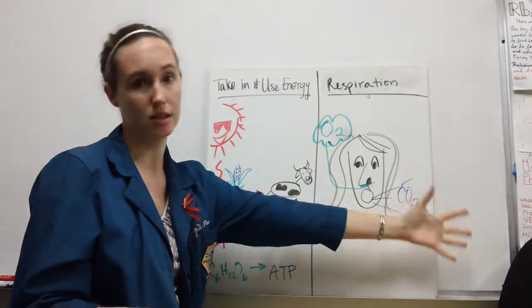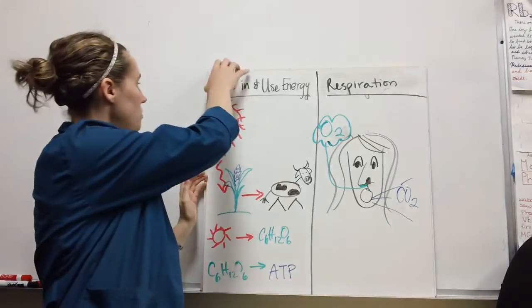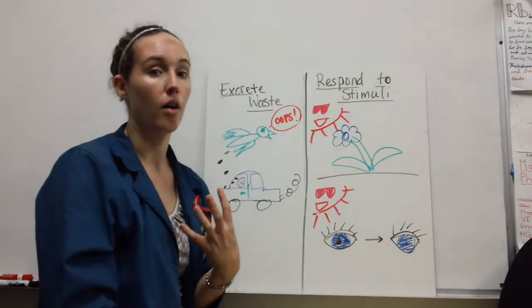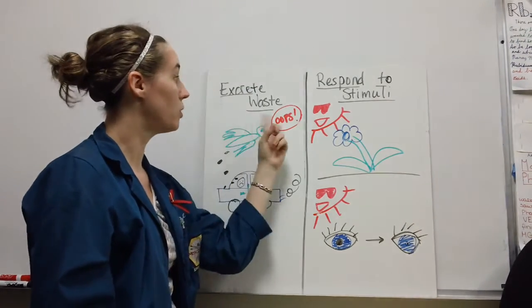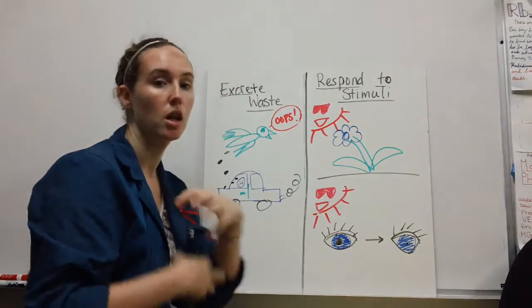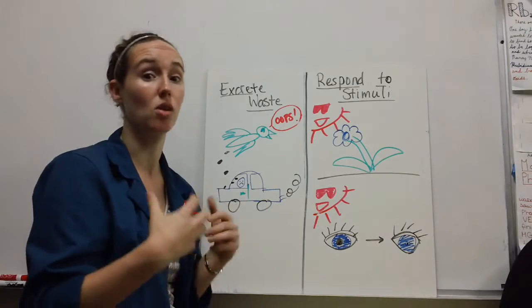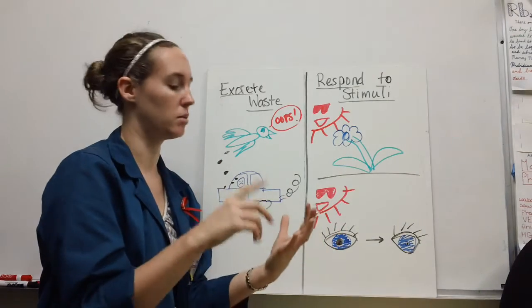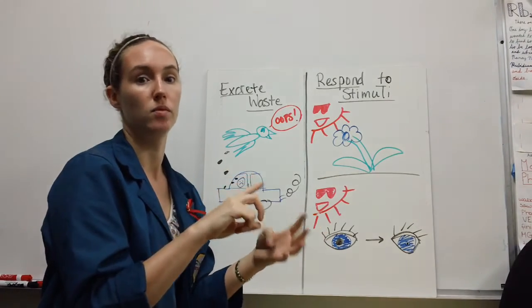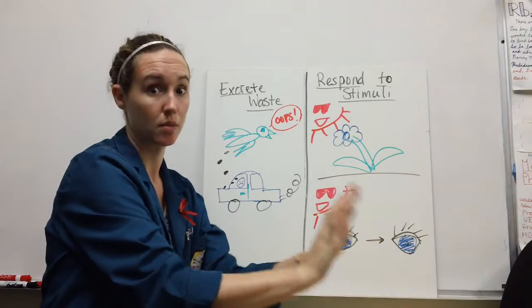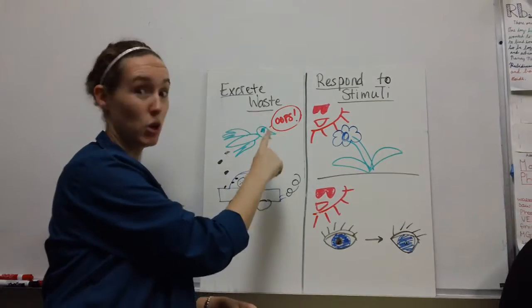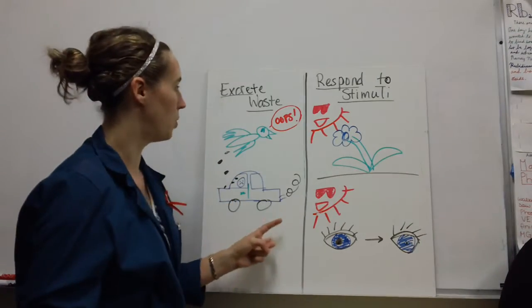All living things excrete waste. We're taking in energy, food, and oxygen, and all of our metabolic processes have waste products. This can be sweat, urine, feces, or sometimes just chemicals that get released out of the skin or outer layer. In this example, I have a bird pooping on somebody's car, but all living things excrete waste.